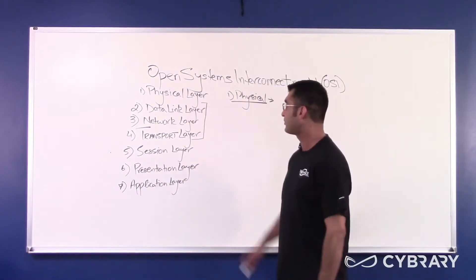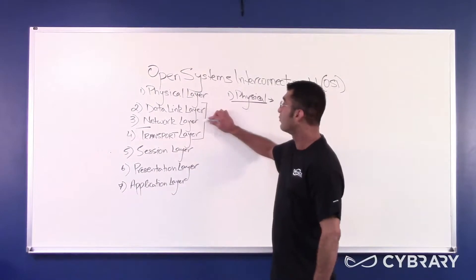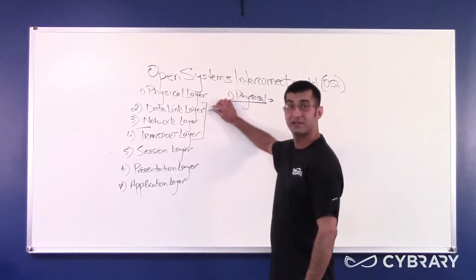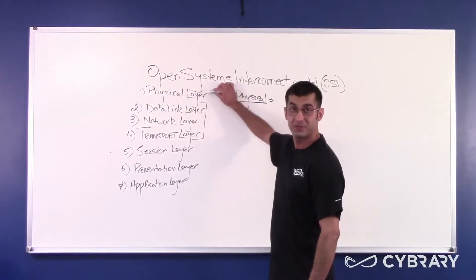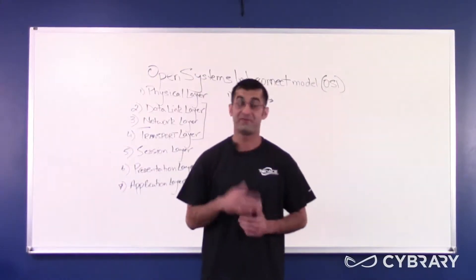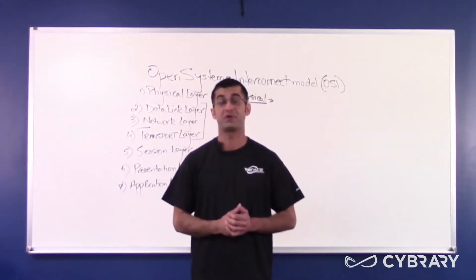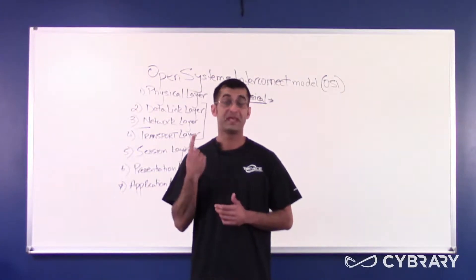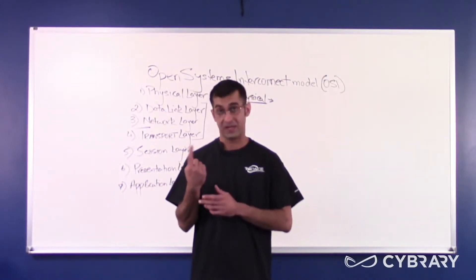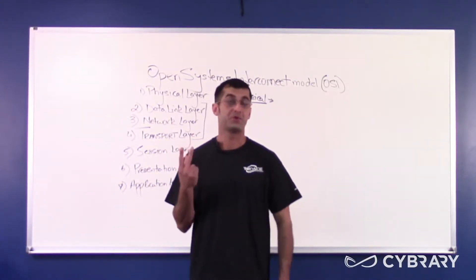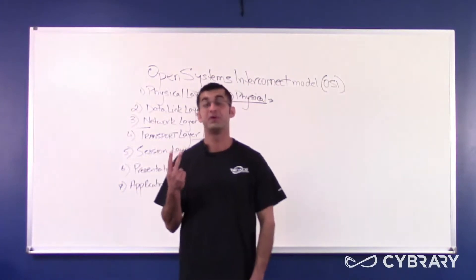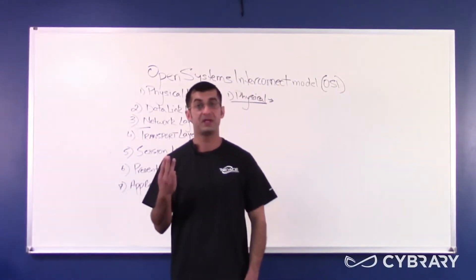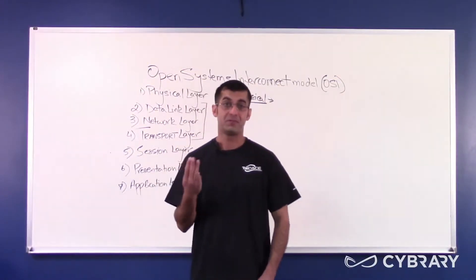A router, for example, will work at the network layer, the data link layer, and the physical layer. The three device types that work only at the physical layer: number one would be cabling, number two would be your repeaters, and number three would be your hubs.